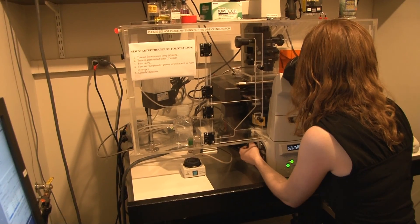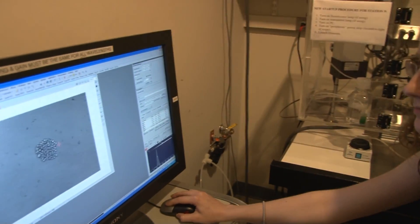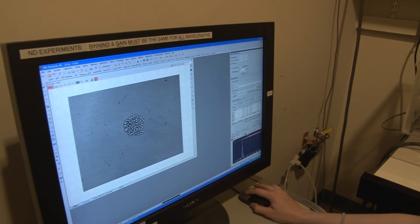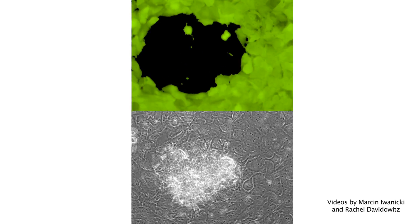Next, the team interfered with molecular components of the cancer cells, one by one, and watched the result. They identified three critical players in the invasion process: integrin, talin, and myosin, which are all proteins known to play a role in cell movement. In this case, they collaborate to help the cancer cells bore into the mesothelium.